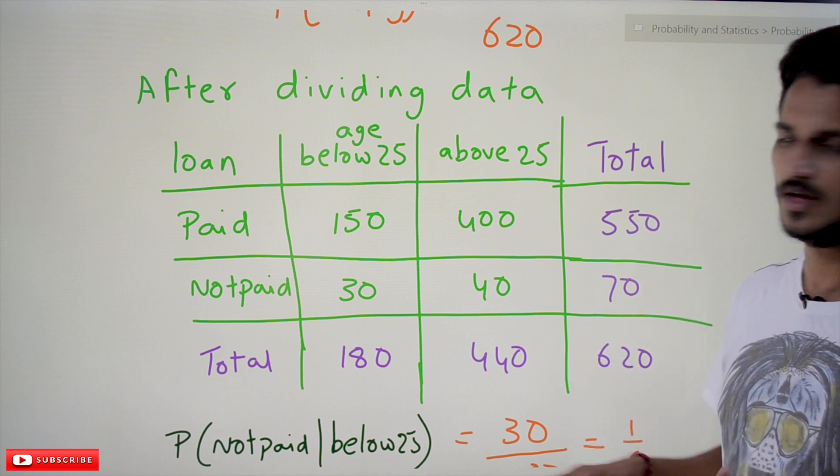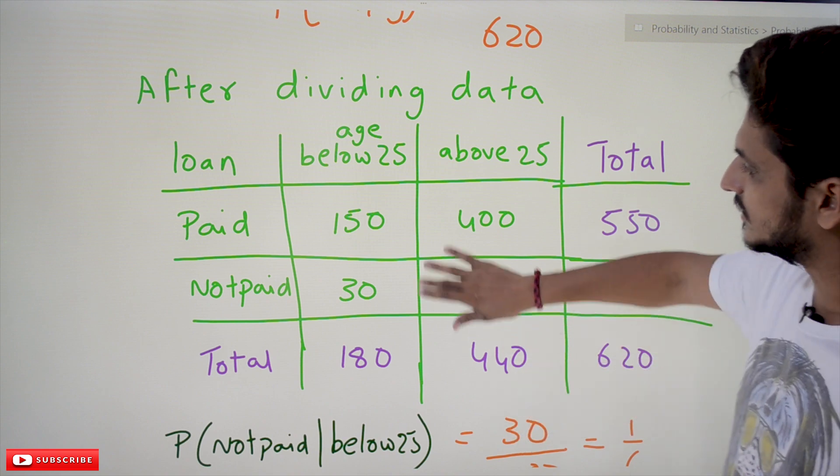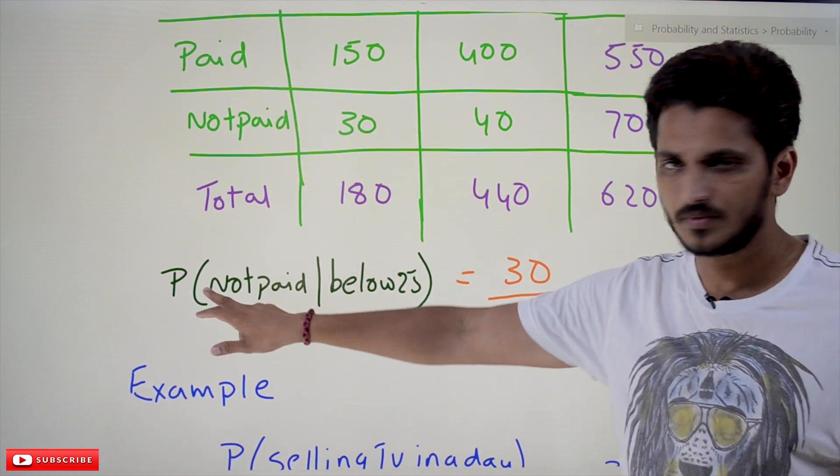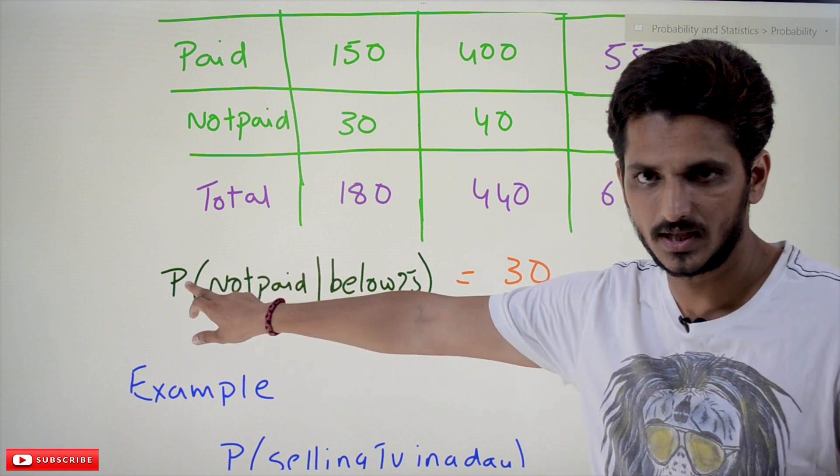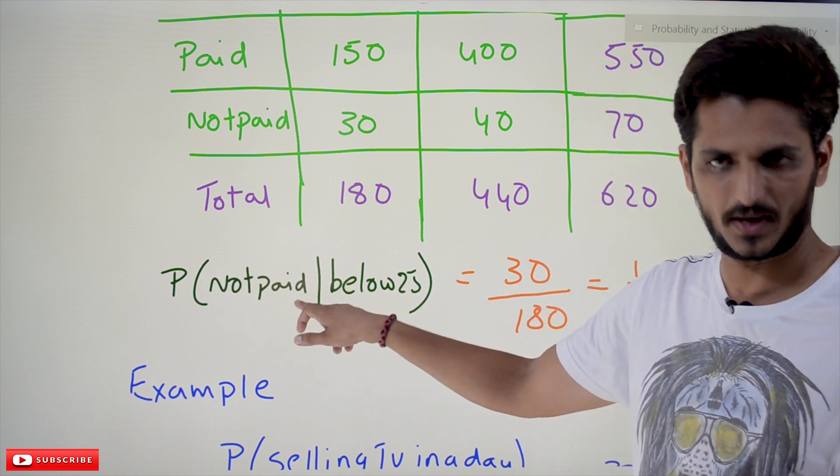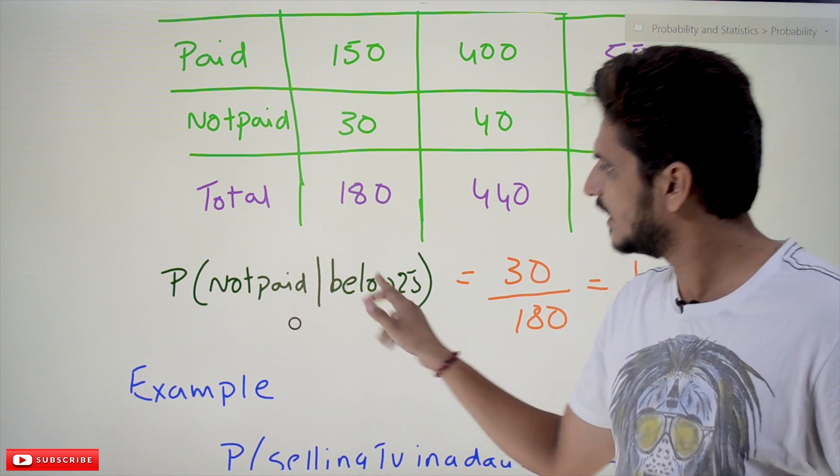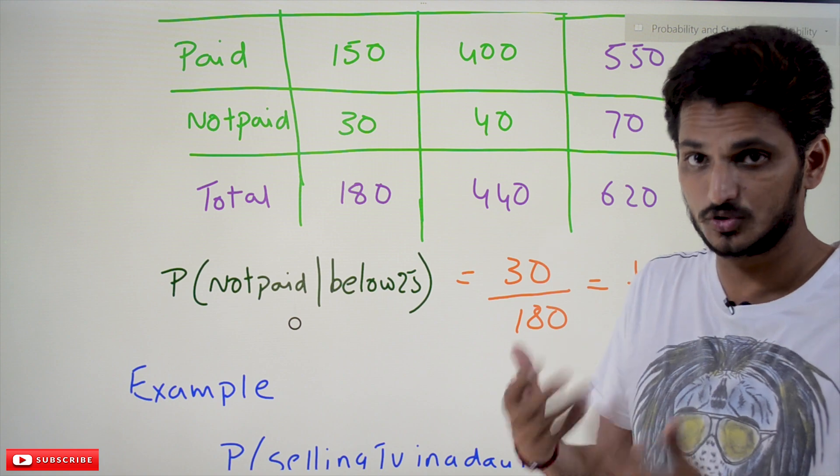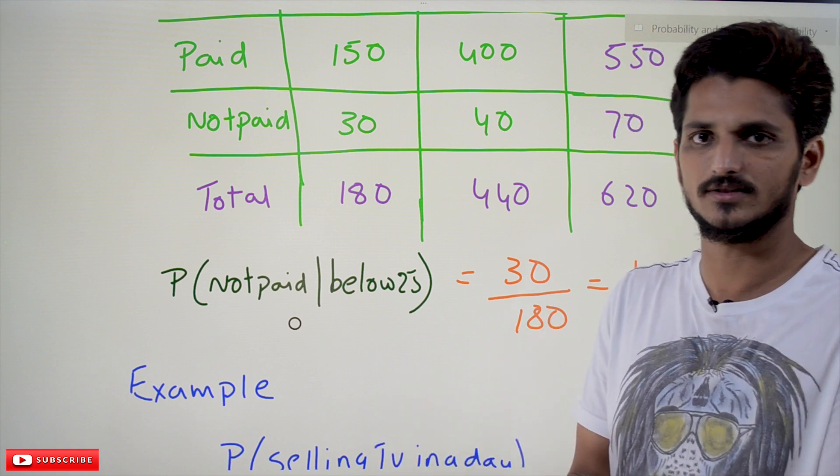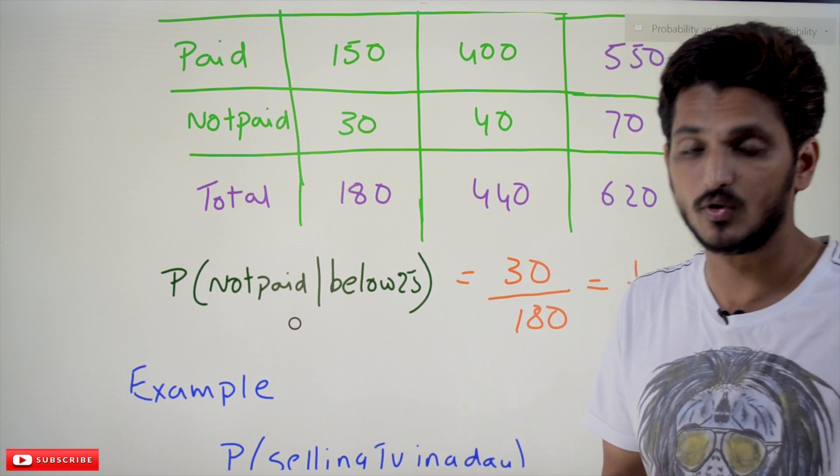Now the question will be like this: suppose if you issue a new loan, what is the probability that he is not going to pay given that his age is below 25? Because if you are issuing the loan, you already know his age. His age is below 25. What is the probability that he is not going to pay?